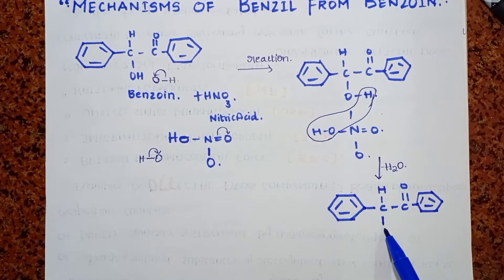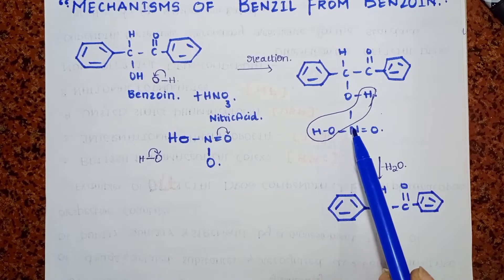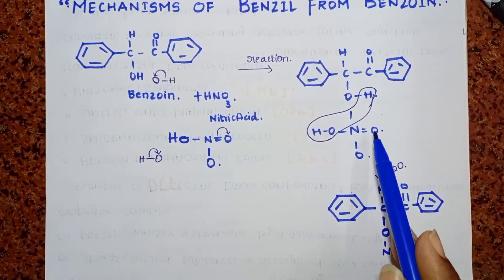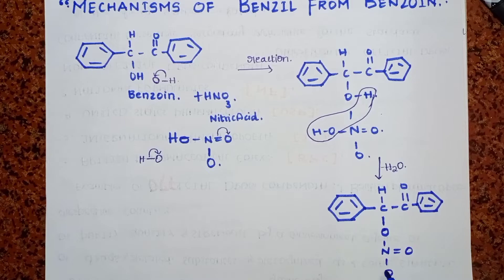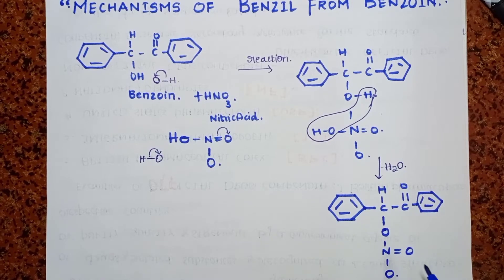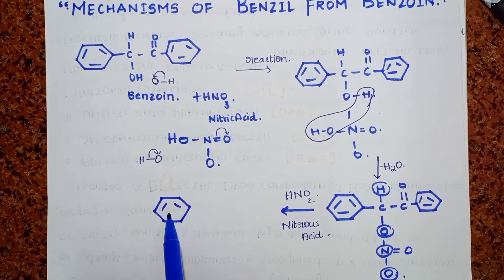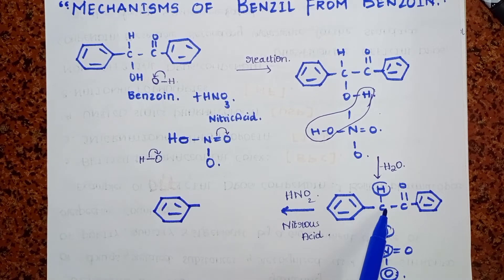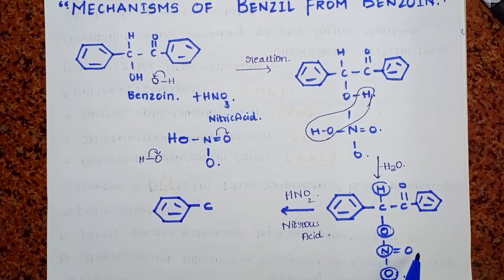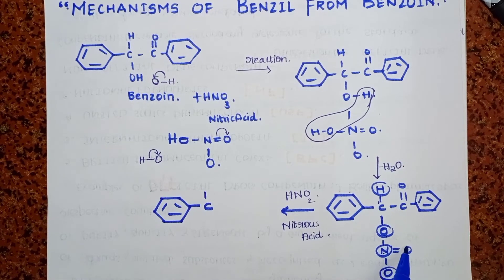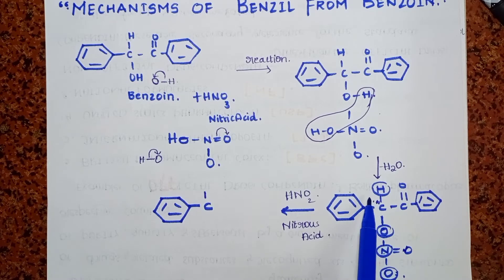After water is removed, the process continuation step: the nitrogen with its two oxygens needs to attach to the benzoin group. The two oxygens are removed, and the nitrogen comes to this position. Then same as before: one oxygen double bond and one oxygen single bond to balance the nitrogen's three valency. The nitrous acid is removed in this process, and the benzil group is formed.